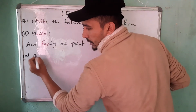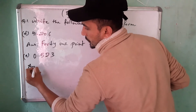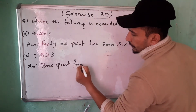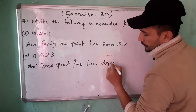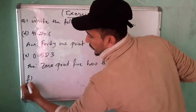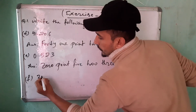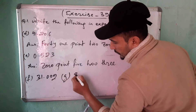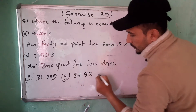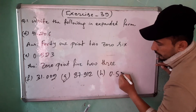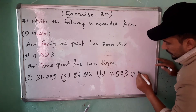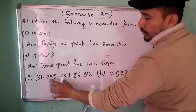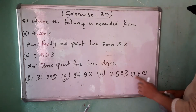Number E is 0.523. The next number F is your home task — it is not in your book, I have given it from my side. The numbers given are: 1.002, 87.912, 0.523, and 7.09.